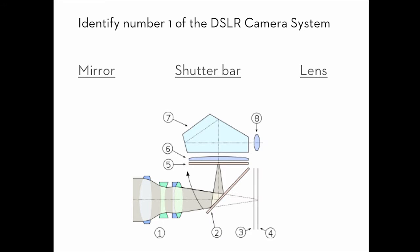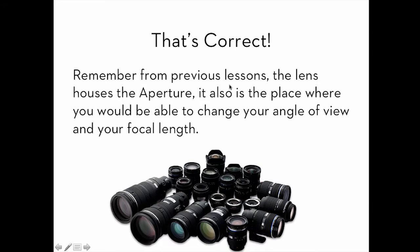We're going to identify number one of the DSLR design scheme. Is it mirror, shutter bar, or lens? Number one's right here. What is it? Mirror, shutter bar, or lens? Remember, this will be on your midterm. It is the lens. Remember from the previous lessons, the lens houses the aperture. It also allows the place where you would be able to change your angle of view and your focal length. That's why there's a bunch of different lenses, because different lenses allow you to achieve different results and different ideas. So it's important to know and to adapt to what you need for that image.